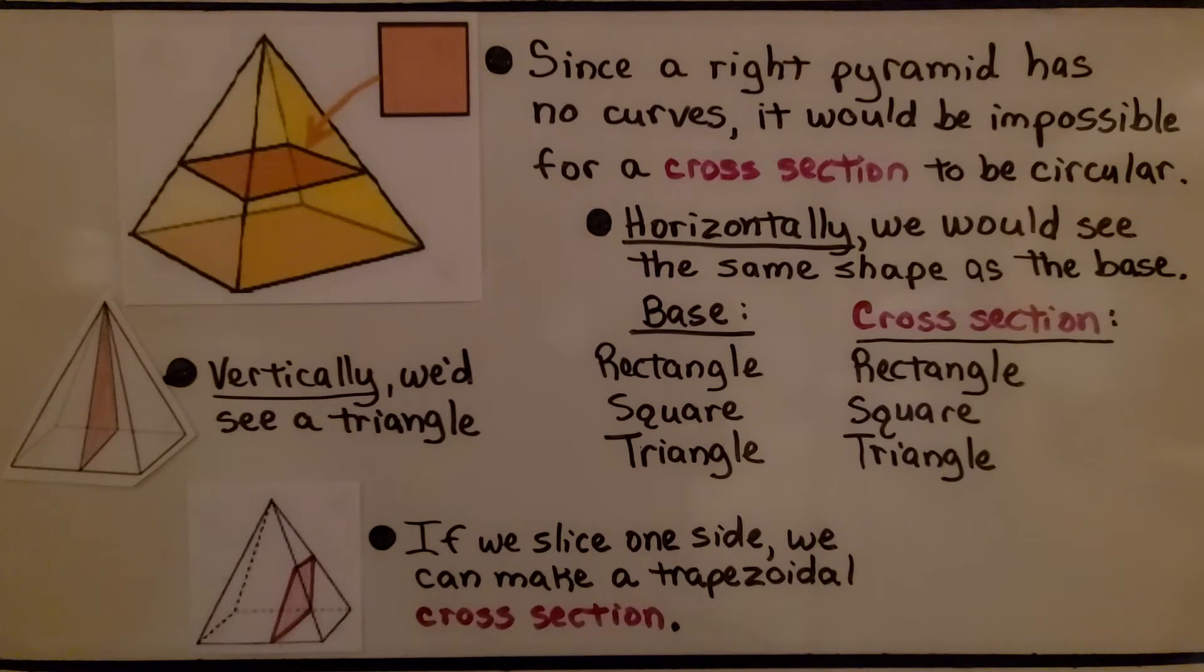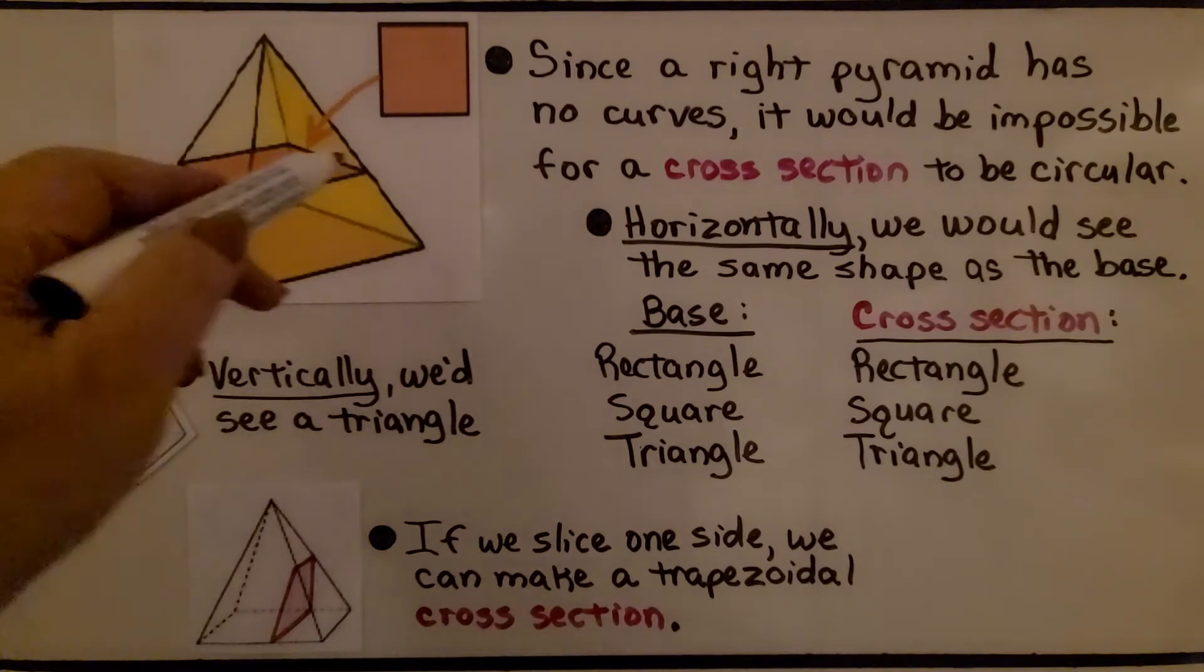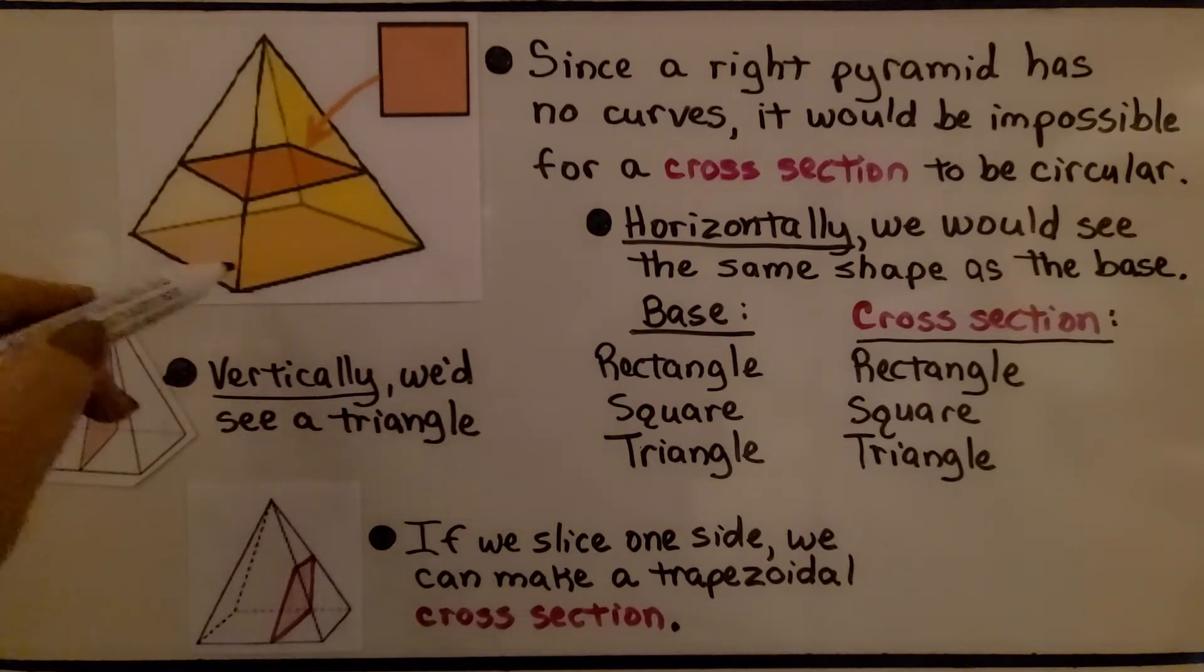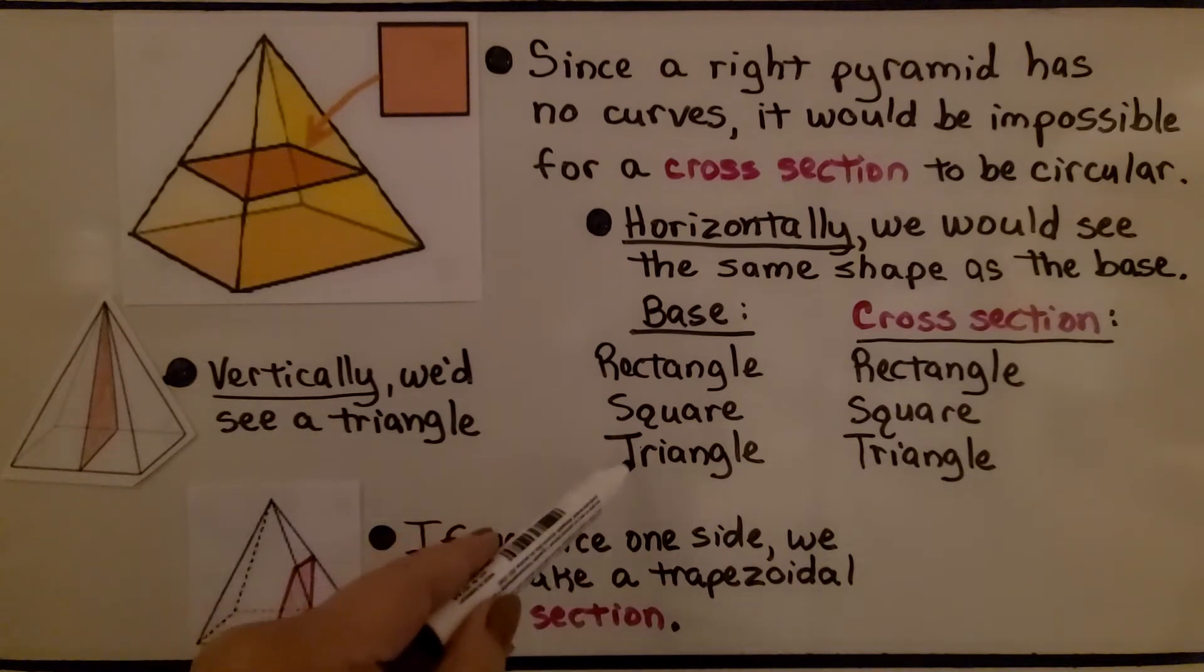Since a pyramid has no curves, it would be impossible for a cross section to be circular. Horizontally, we would see the same shape as the base. If the base is a rectangle, the cross section would be a rectangle. If the base is a square, the cross section would be a square. And if the base is a triangle, the cross section would be a triangle.